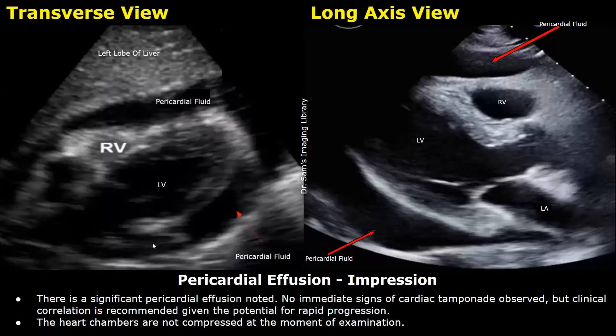Impression: There is a significant pericardial effusion noted. No immediate signs of cardiac tamponade observed, but clinical correlation is recommended given the potential for rapid progression. The heart chambers are not compressed at the moment of examination.